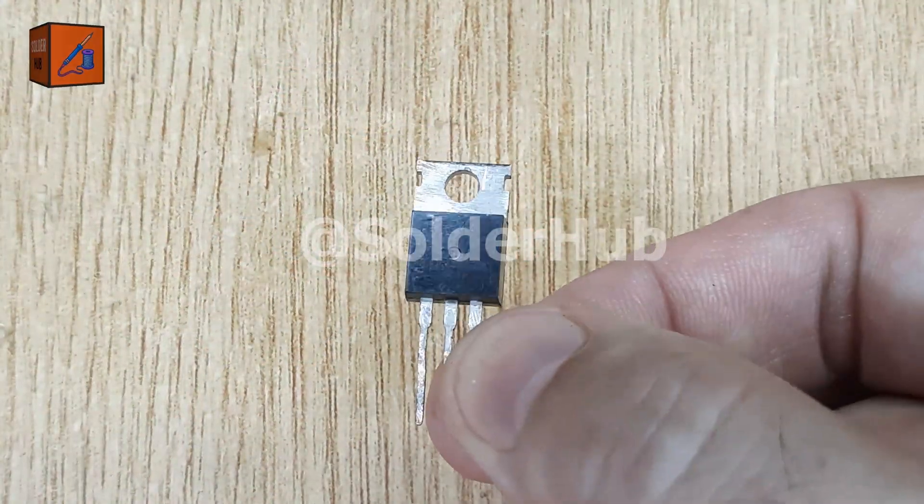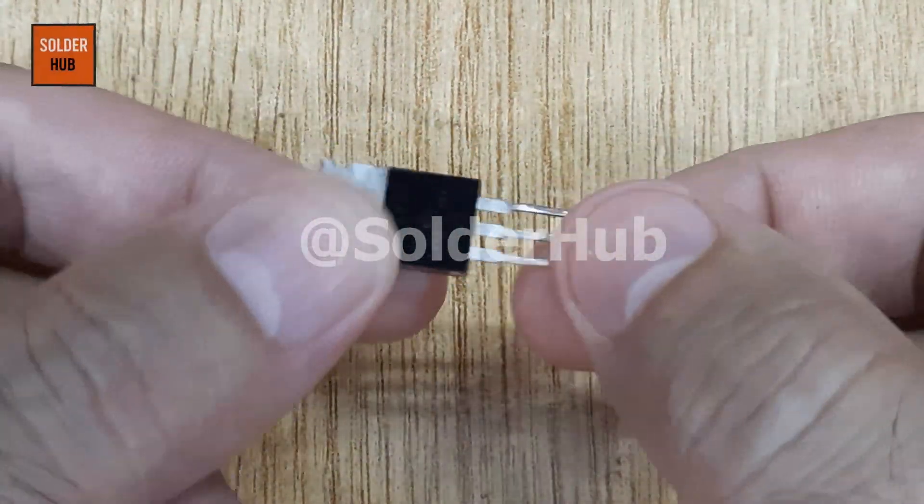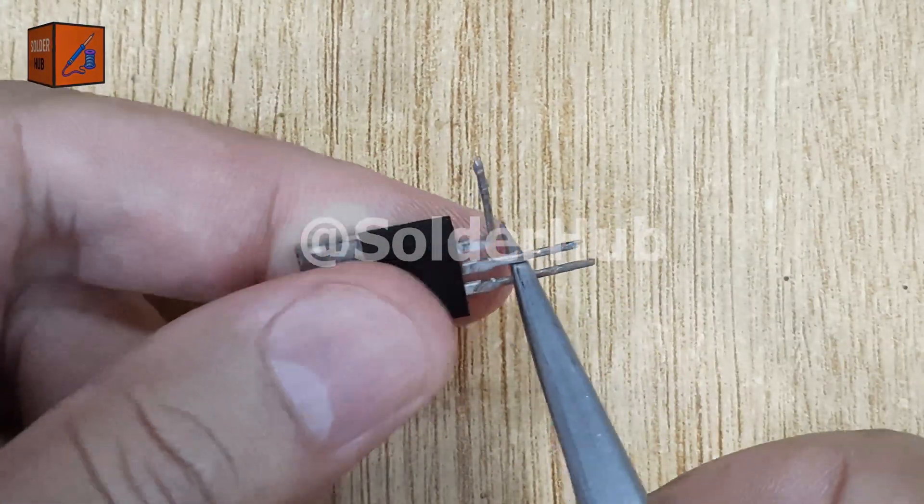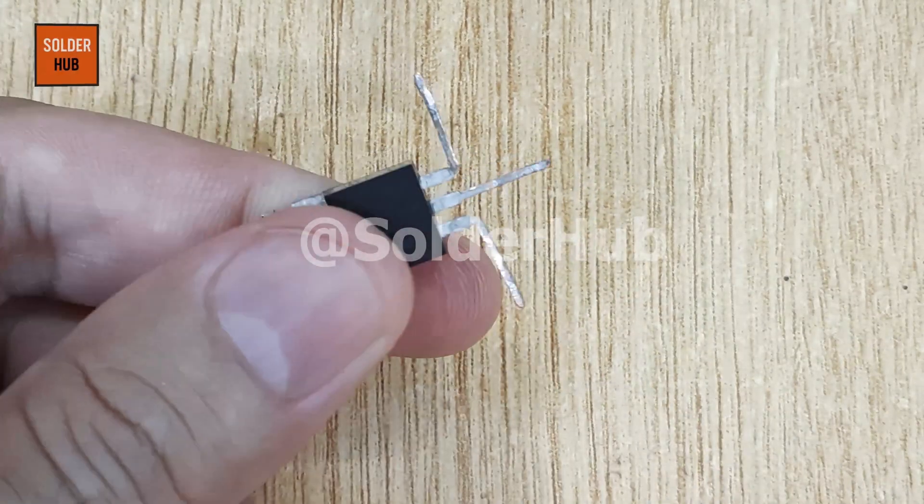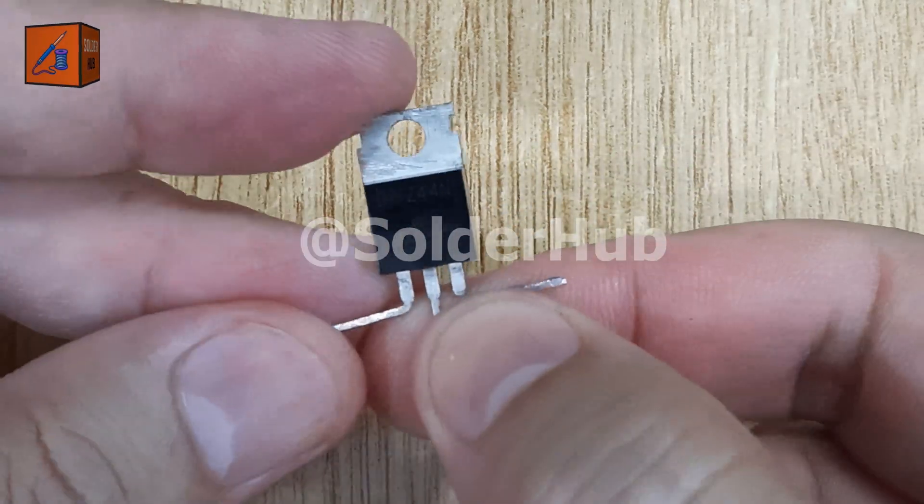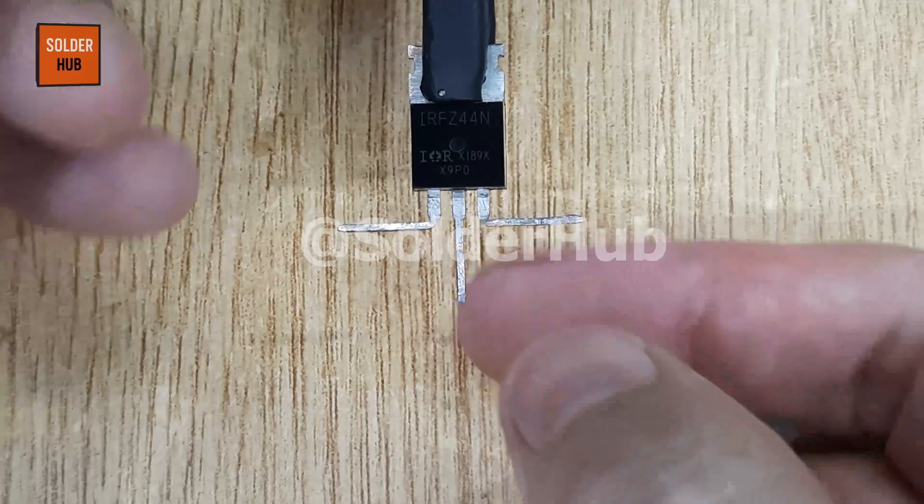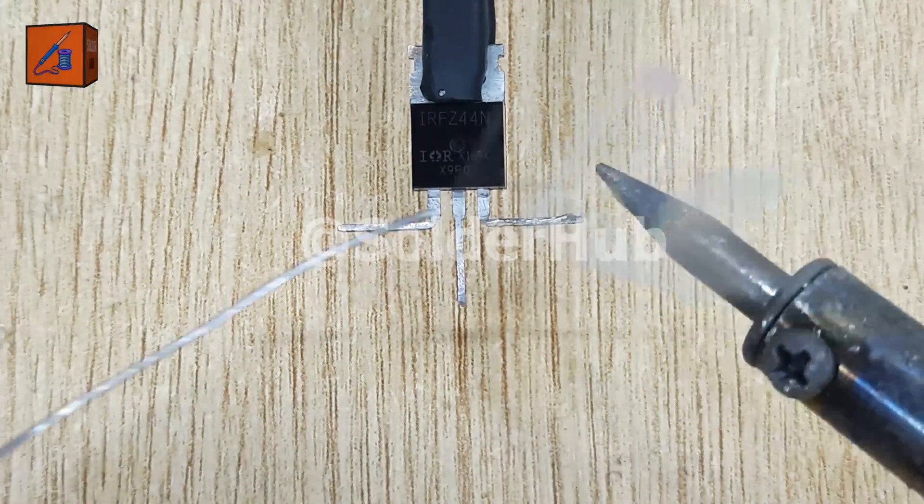First, I take the IRFZ44N MOSFET, which is a strong N-channel MOSFET, commonly used for switching and amplification. To begin, I bend the source pin and the gate pin slightly so they can align properly for soldering. After bending, I apply a thin layer of solder on both pins.